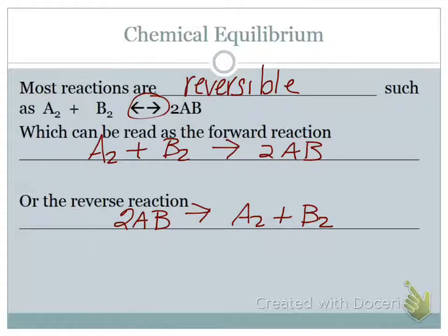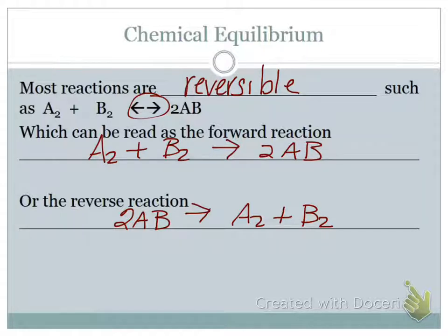Student question: Do substances form into 2AB and then immediately break down into the two different particles? Yes, they actually are — that's what equilibrium is. Both opposing reactions are happening at the same rate, and we're fixing to find that out.